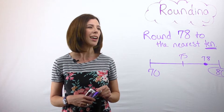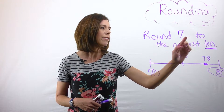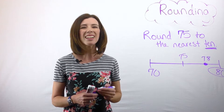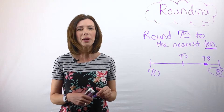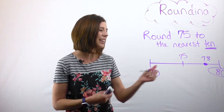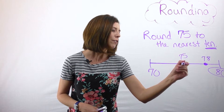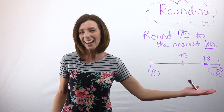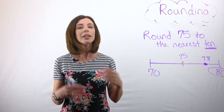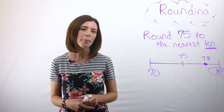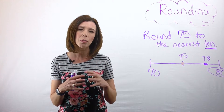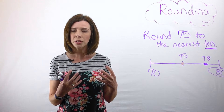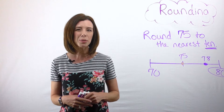Now you might be thinking, okay, but what if I change this and it's no longer 78, but now it's 75? Now what do I do? That's a good question because technically, if I put 75 on here, it's equidistant from 70 and 80 — we've got a problem. It turns out that just like in order of operations, where mathematicians around the world agree to do certain operations in a certain order, the same goes with rounding.